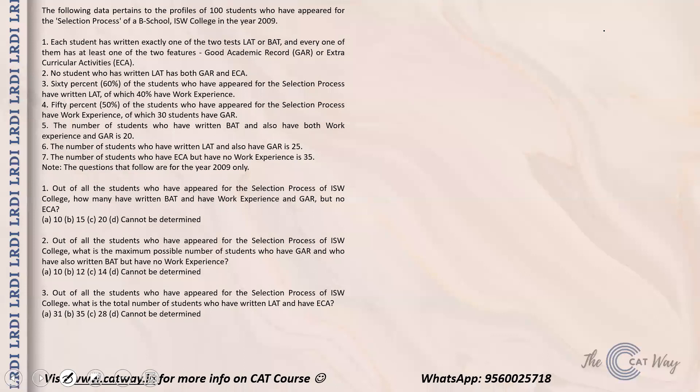The question is that the following data pertains to the profile of 100 students who have appeared for the selection process of a B-school, ISW College, in the year 2009. Each student has written exactly one of the two tests — LAT or BAT — and every one of them has at least one of the two features: good academic record (GAR) or extracurricular activities (ECA).